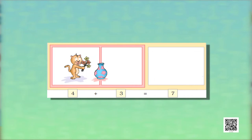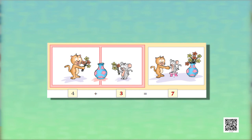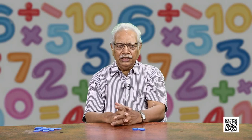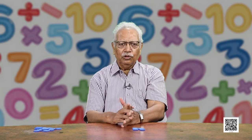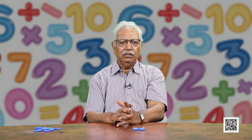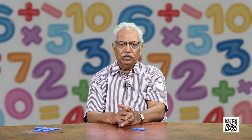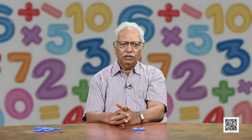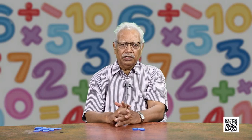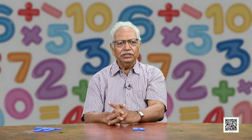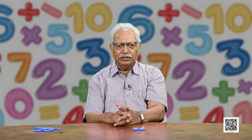Now we are going to use the symbol of plus instead of the word AND. Here 4 flowers are there and 3 flowers are added. We can count forward from 4 and count 3 more: 4, 5, 6, 7 — total flowers are 7. The statement will be 4 plus 3 is equal to 7. You have to note that one symbol at a time has to be introduced. First we introduced 'equal to,' and now we have introduced 'plus.' So, 4 plus 3 is equal to 7.